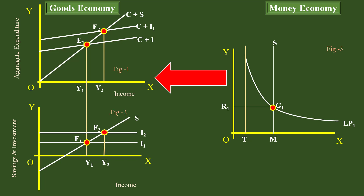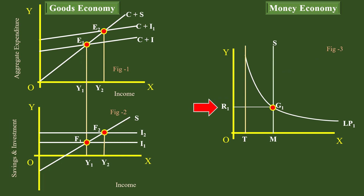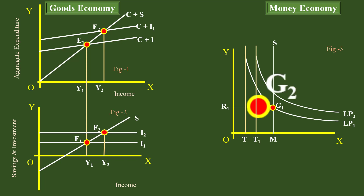Let us examine this interdependence. Look at Figure 3. To begin with, the equilibrium interest rate is R1. After an increase in income from Y1 to Y2, the transaction demand for money increases. The transaction demand curve T is shifted to the right; the new transaction demand curve is T1. This increase in turn shifts the liquidity preference curve to the right, moving from LP1 to LP2. The new demand curve for money cuts the supply curve of money at point G2, and the interest rate increases from R1 to R2. This is how an increase in income in the goods economy affects the interest rate in the money economy.